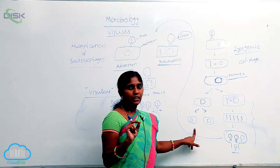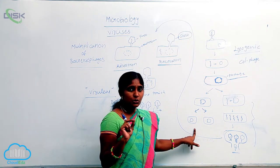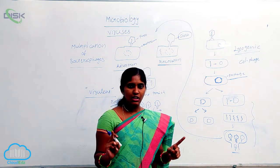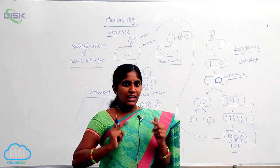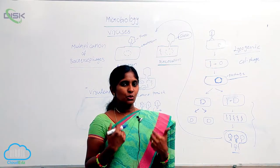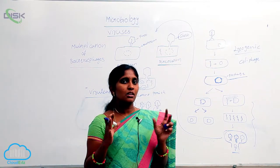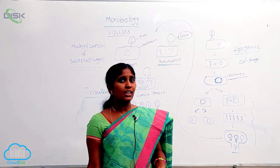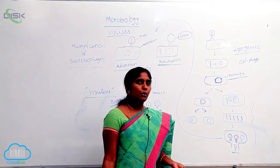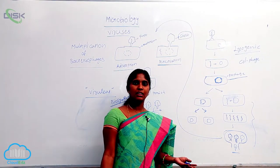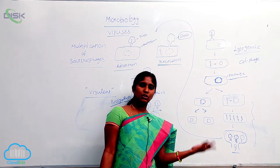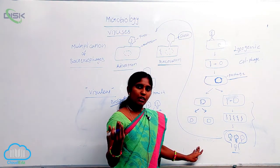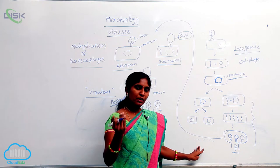So the lysogenic cycle involves two ways. One way: if the transferred viral DNA shows dominance over the bacteria, they enter into the lytic cycle. In the opposite case, if the bacterial DNA shows dominance, they are involved in binary fission.